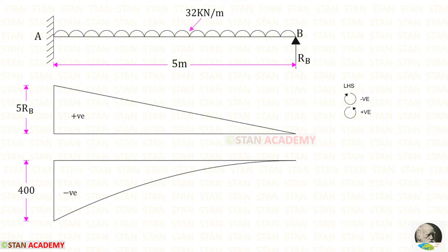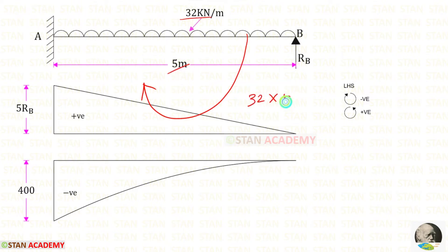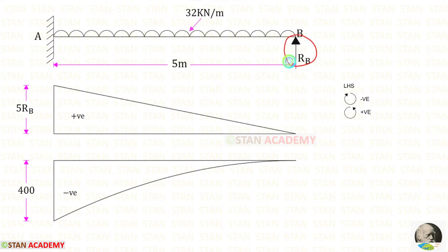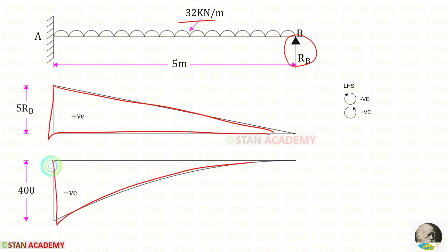For the UDL, it is acting in the clockwise direction, so it will be negative. For a UDL we multiply with the distance and distance divided by 2. Here the distance is 5, so 32 × 5 × 5/2 = 400. Since it is negative, the diagram is drawn below the line. The diagram for Rb is triangular in shape, and the diagram for the UDL is parabolic in shape.